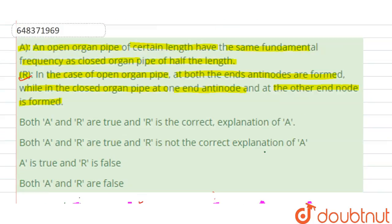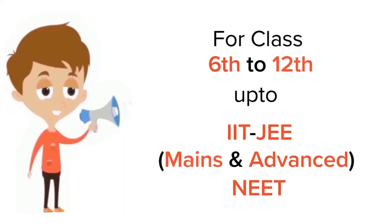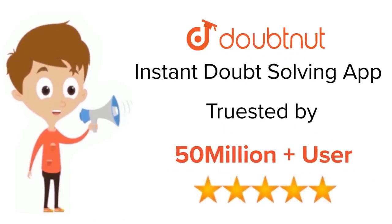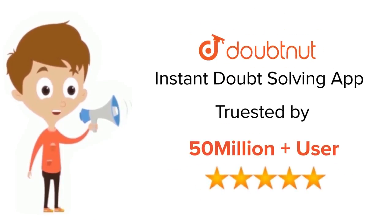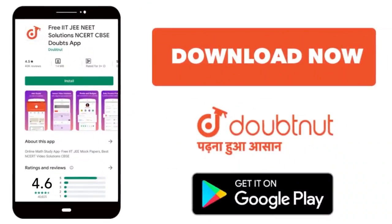So our assertion is also correct. Both assertion and reason are correct, but the reason is not explaining the assertion. Therefore, the second option is the right answer. Thank you. For class 6 to 12, IIT JEE and NEET level, trusted by more than 5 crore students — download the DoubtNut app today.